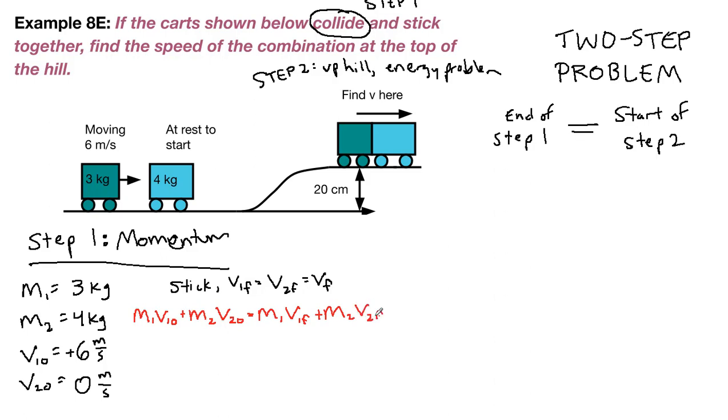So we'll write it down before we plug anything in. Being careful to be thinking about the subscripts before stuff is on the left, after stuff is on the right, two different masses. And now we can just plug stuff in from our nice list that we made. 3 times 6 plus 4 times 0 is equal to 3 V final plus 4 V final. So 18 is equal to 7 V final, divide by 7.